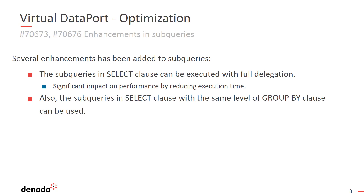While subqueries were included in the previous Denodo Platform update, the functionality has been expanded in this update. Now, the select clause acts as any other expression in a query, even as part of expressions used within a subquery. At runtime, the queries that contain subqueries in the select clause are converted into left joins. That means that the queries that include subqueries can be delegated to the source, which significantly improves query speed.